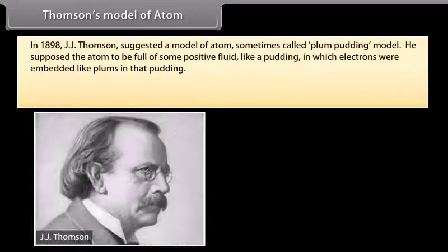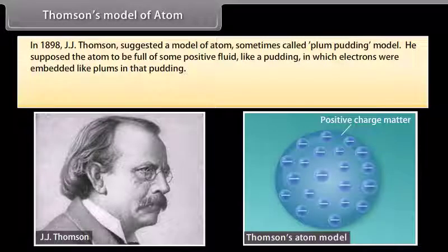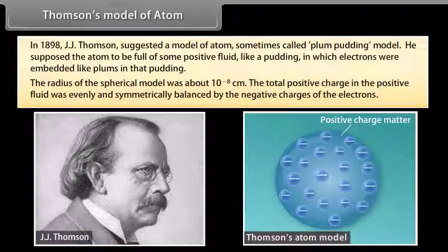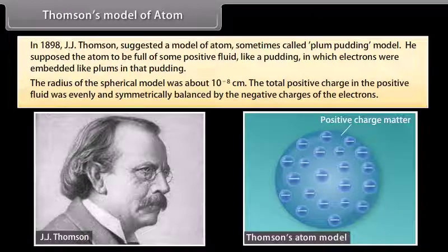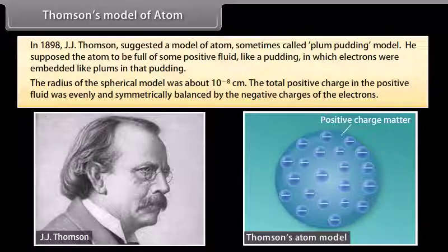In 1898, J.J. Thomson suggested a model of atom, sometimes called the plum pudding model. He supposed the atom to be full of some positive fluid, like a pudding, in which electrons were embedded like plums in that pudding. The radius of the spherical model was about 10 to the power minus 8 centimeter. The total positive charge in the positive fluid was evenly and symmetrically balanced by the negative charges of the electrons. But this model was discarded because it failed to satisfy the results of the experiments performed by Rutherford.